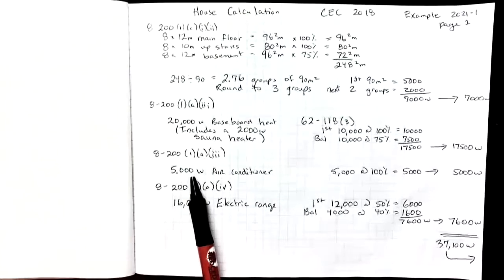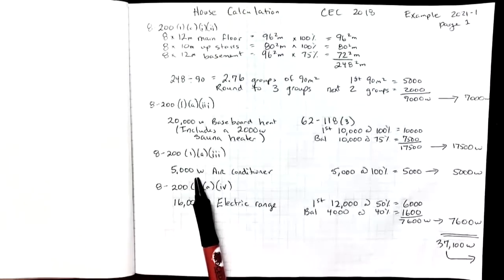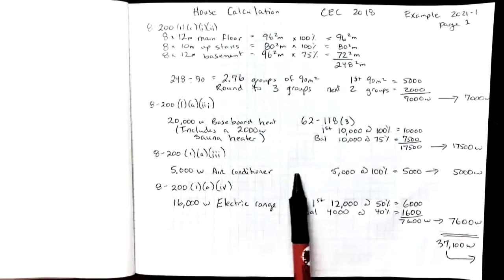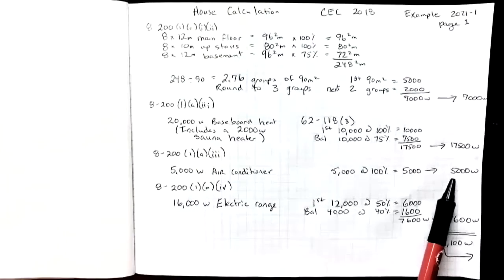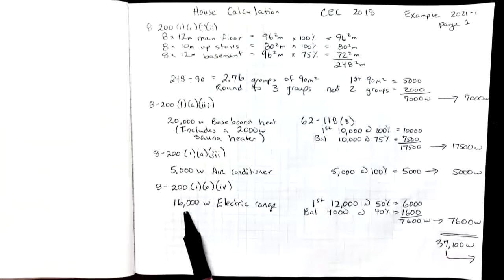Rule 8-200(1)(a) item 3 dictates that we take 100% of the air conditioning demand towards the service. So 5,000 watt air conditioner at 100% means I take 5,000 watts towards the main service.